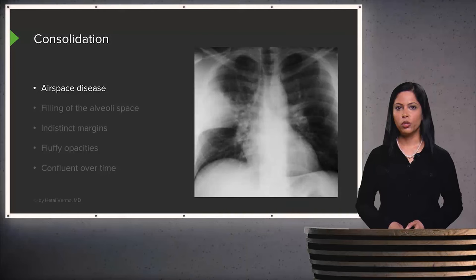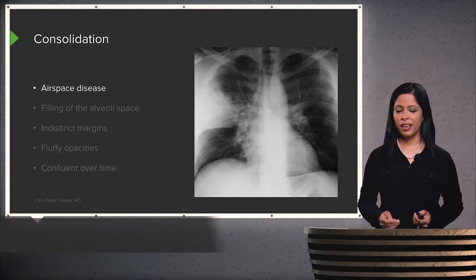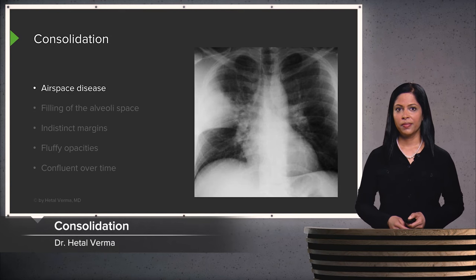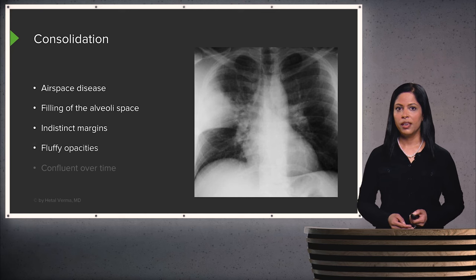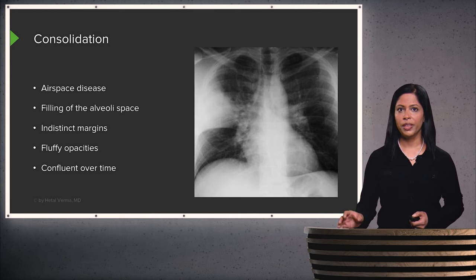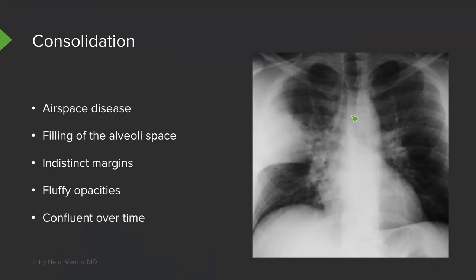Let's discuss one of the most common abnormalities seen on a chest x-ray: consolidation. Consolidation is a type of airspace disease that causes filling of the alveolar spaces. On a chest x-ray, it appears to have indistinct margins and presents as fluffy opacities that become confluent over time. This white area visible on the chest x-ray is an area of consolidation.